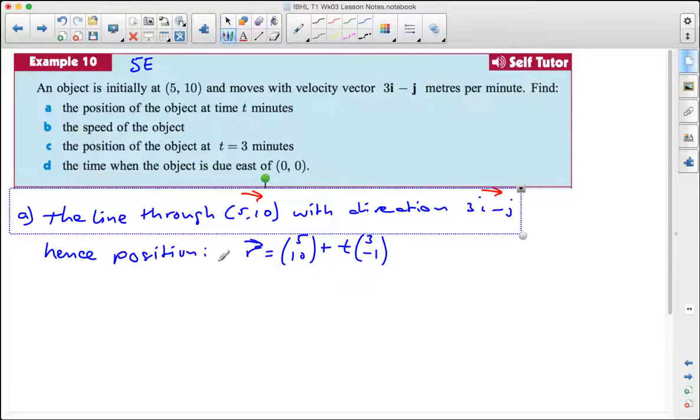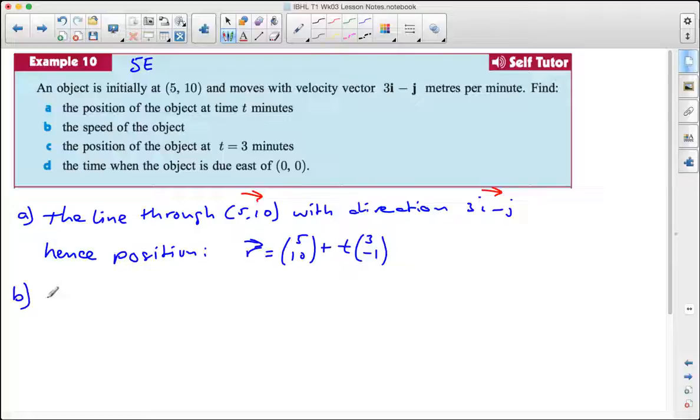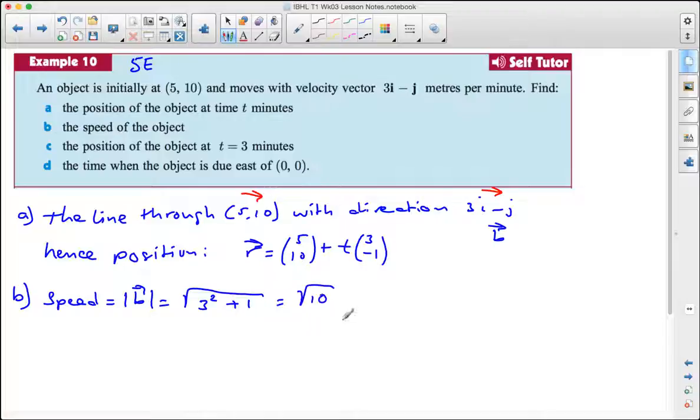For part b we need the speed of the object. The speed is the length of the direction vector. If this vector here is called b, then it's the length of b. The length of that one is the root of 3 squared plus 1, which is the root of 10, and that's meters per minute.